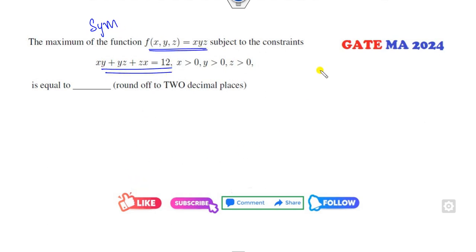So that means my objective function and my constraint both are symmetric. Then there is no need to solve like this. What is the shortcut trick for you? Whenever you have a function that is symmetric, substitute x is equal to y is equal to z. If it is a two-variable, you can substitute x is equal to y. Then your function will be x cubed, and the constraint is 3x squared equals 12.